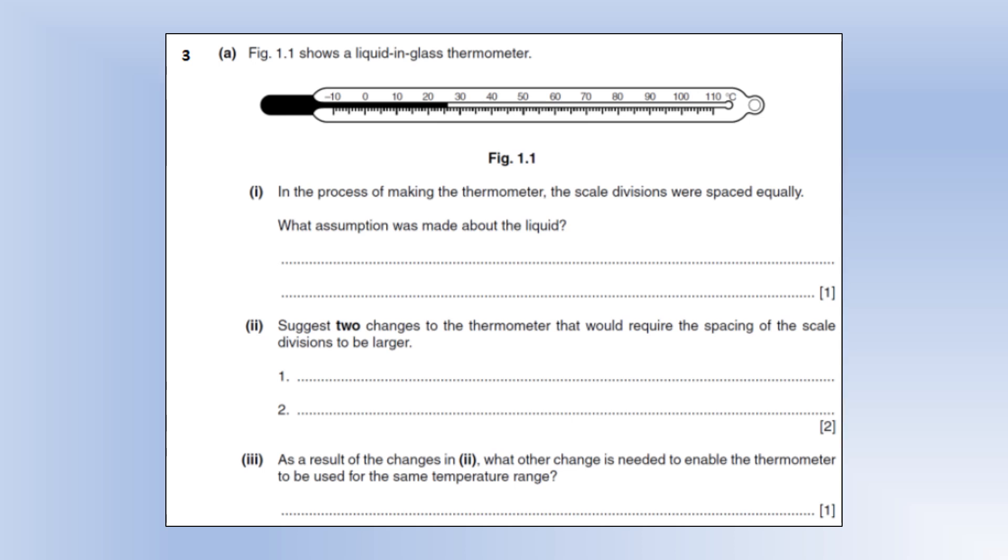Okay, so the diagram shows a liquid in glass thermometer. In the process of making a thermometer, the scale divisions were spaced equally. What assumption was made about the liquid? Well, one assumption we've made is that it expands linearly. So if we space the divisions equally, we assume that every degree in temperature change, the volume of the liquid increases by the same amount, which is what we describe as a linear change.